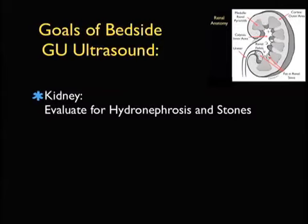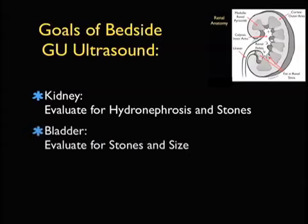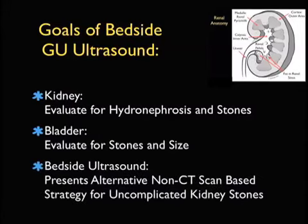What are the goals of bedside GU ultrasound for the emergency physician? First of all, we're going to inspect the kidney closely, looking for hydronephrosis. We may also be able to see kidney stones lodged within the parenchyma or at the ureteropelvic junction. We should also image the bladder to look for bladder stones, stones that have migrated from the kidney to the UVJ, and to assess bladder size. Hopefully, this module presents bedside ultrasound as a non-CT-based strategy for managing uncomplicated kidney stones without the associated radiation dose.